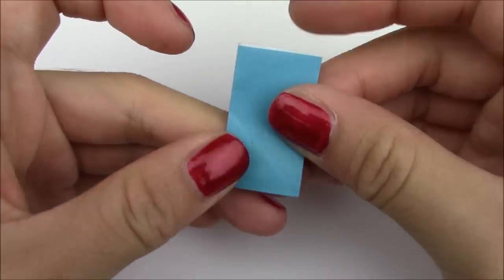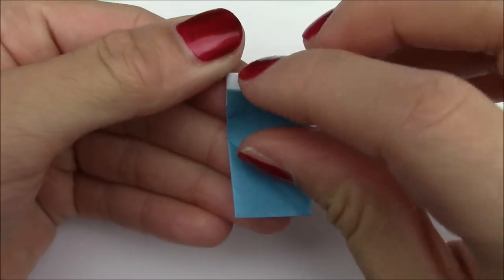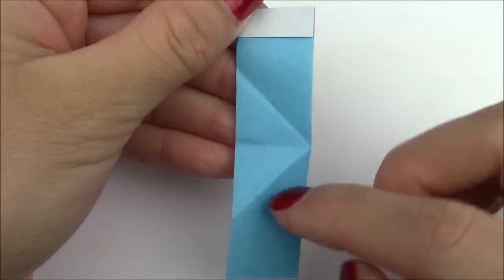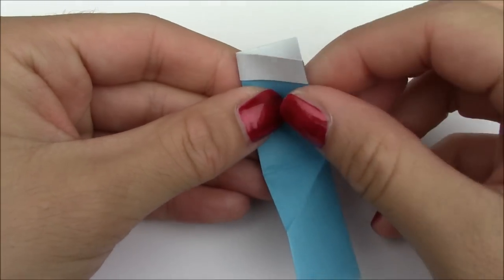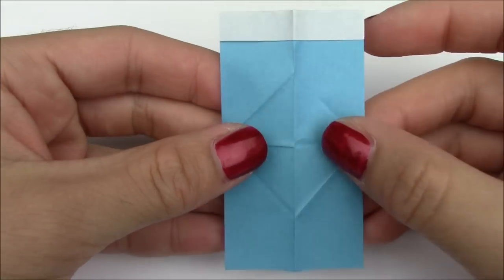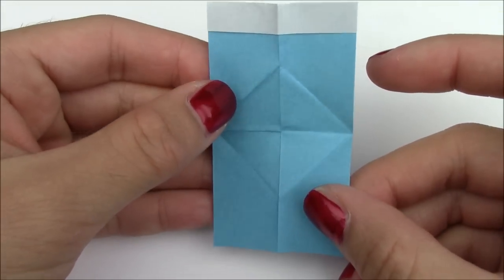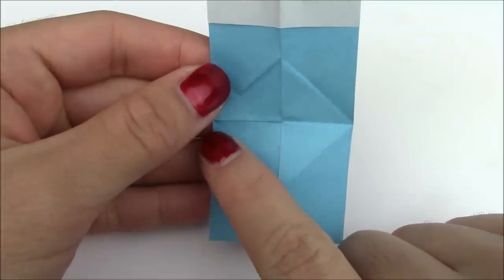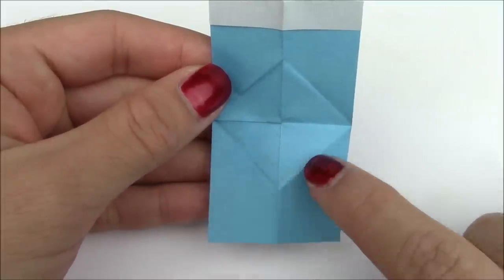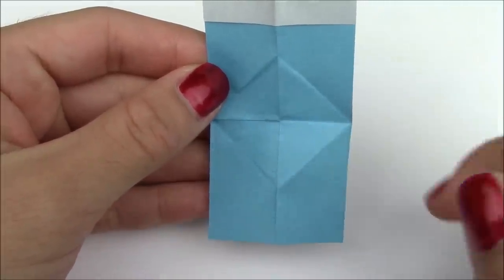Unfold. Fold. And then unfold this fold. And also this one. So now you have something that looks like this. I want you to take notice of this diagonal crease on the left, this one on the right, and this one right at the very bottom.